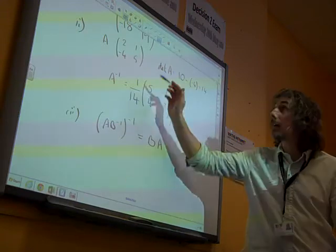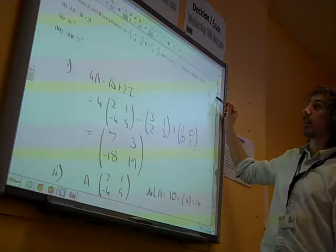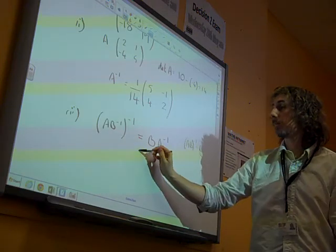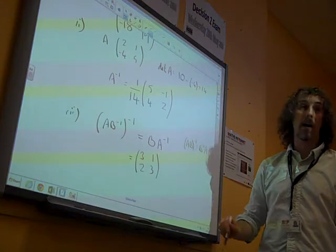Because B was given to you in the question. It's the matrix 3, 1, 2, 3. And the inverse of A, we've just worked out.